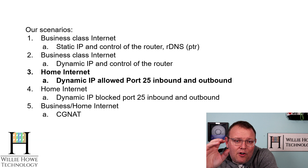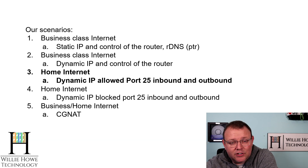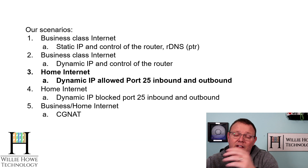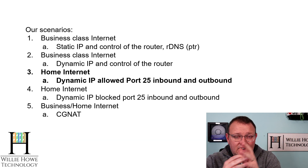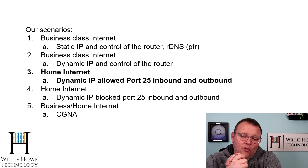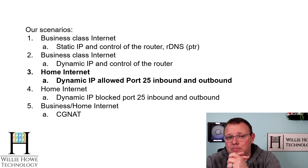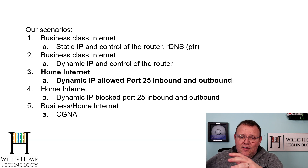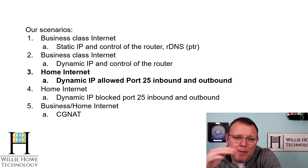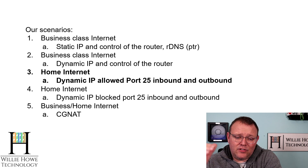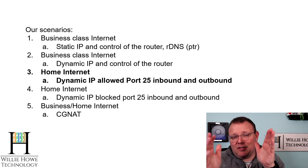Scenario four is home internet with a dynamic IP but blocked port 25 — SMTP inbound and outbound. If you can't get email in and out of the system, it's really going to cause you a challenge. Scenario five is business or home internet where the IP provided is carrier-grade NAT, which does not allow port forwarding from the ISP. They're doing all kinds of things to preserve IP addresses, so you may have hundreds of clients behind a single public IPv4 address and you're not going to get ports forwarded at all. The solution for scenarios four and five is going to overlap and it's going to be fantastic when we get to it.